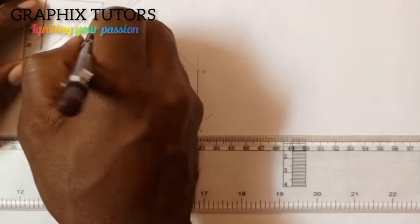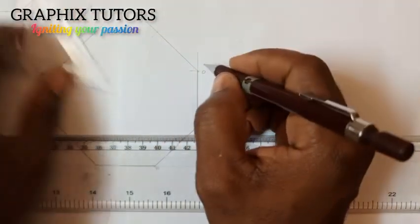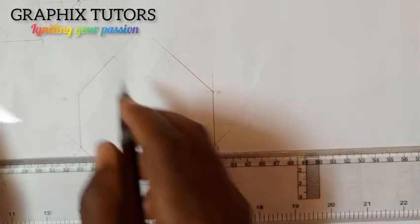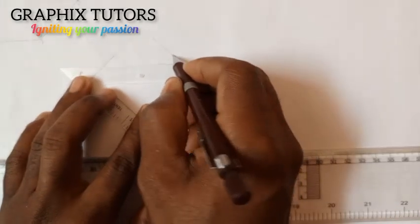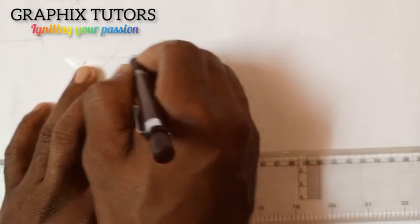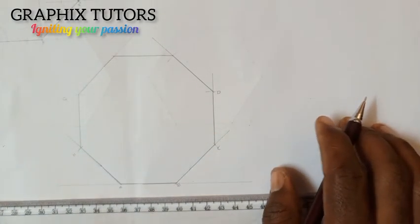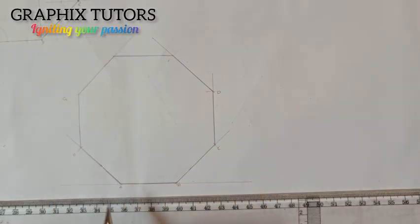I'm going to join it together like this, and I'll come here also and join here together. After you've done that, you're just ticking this and you close it up with your rule from this point to this point this way. Now this is our octagon: A, B, C, D, E, F, G, and H.